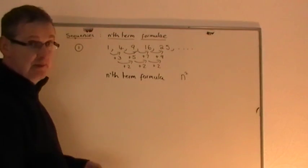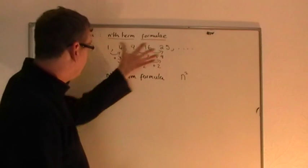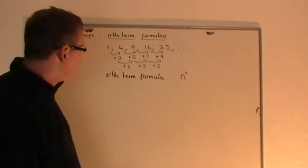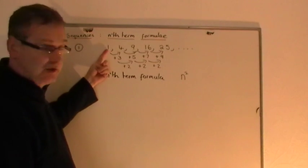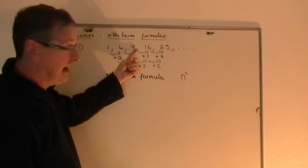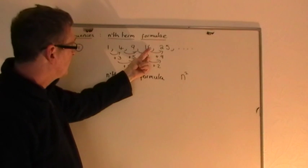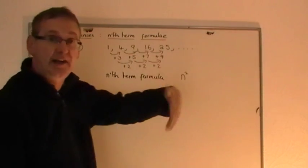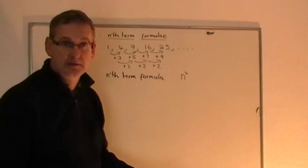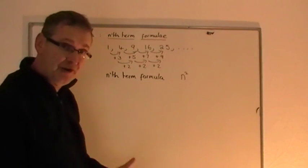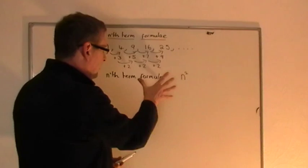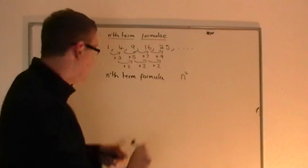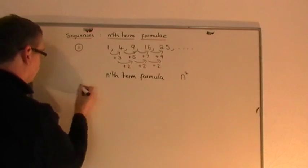To be honest, some of you might have spotted that without going through the second difference method — because 1 is 1 squared, 4 is 2 squared, 9 is 3 squared, 16 is 4 squared, 25 is 5 squared. So the nth term is n squared. However, I'd rather do it formally, because this more formal approach can help you when you get onto slightly harder examples.